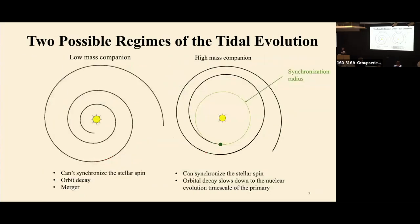There are two possible regimes for tidal evolution. The first case is that if the companion is a low-mass object, it doesn't have enough angular momentum to synchronize the orbit. Once the tidal effect is really strong, the secondary will spiral in and the system will merge. If the secondary is a relatively massive companion, it has enough angular momentum to synchronize the orbit. When tidal effects are strong, the secondary experiences a small spiral in, then after reaching the synchronization radius it maintains a stable configuration for a long timescale. The key takeaway is that synchronization can make the system more stable and survive longer before merger.